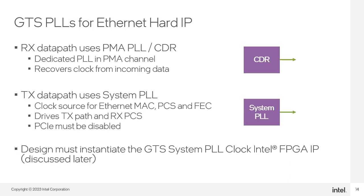Two PLLs are needed when using the Ethernet Hard IP. The receive path has a dedicated clock data recovery, or CDR-PLL, for tracking the incoming data and extracting the embedded clock. For transmit operation, the GTS transceiver system PLL is required; it drives the MAC, the PCS, and the FEC blocks, as well as some blocks in the receive path. Note the system PLL is primarily associated with the PCI-E Hard IP, so the PCI-E Hard IP must be disabled, or you must use a system PLL from a neighboring GTS transceiver bank. Designers must instantiate the system PLL clock IP in their designs.